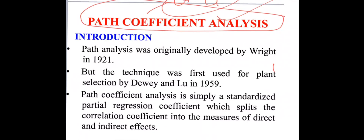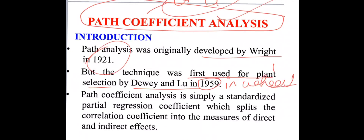What is path coefficient analysis? The concept of path analysis was originally developed by Wright in 1921, and this technique was first time used for plant selection by Dwey and Liu in 1959 in wheatgrass. This is a question asked in many GRF, SRF, and ICAR NET examinations. The answer is Dwey and Liu in 1959, and after that Ramanujan used this technique in brassica in 1963.